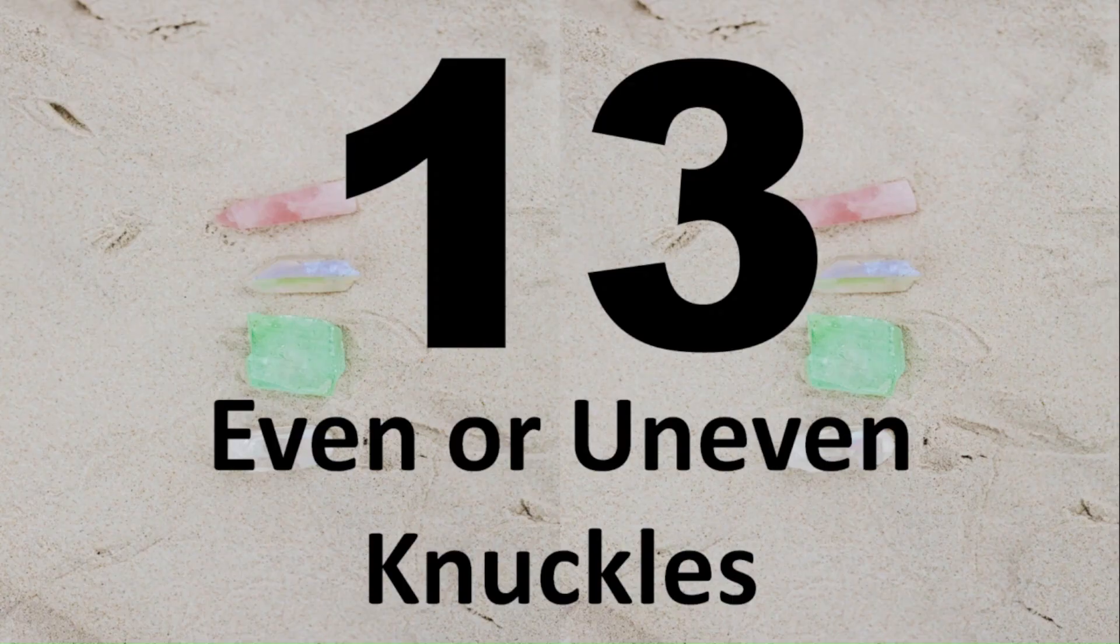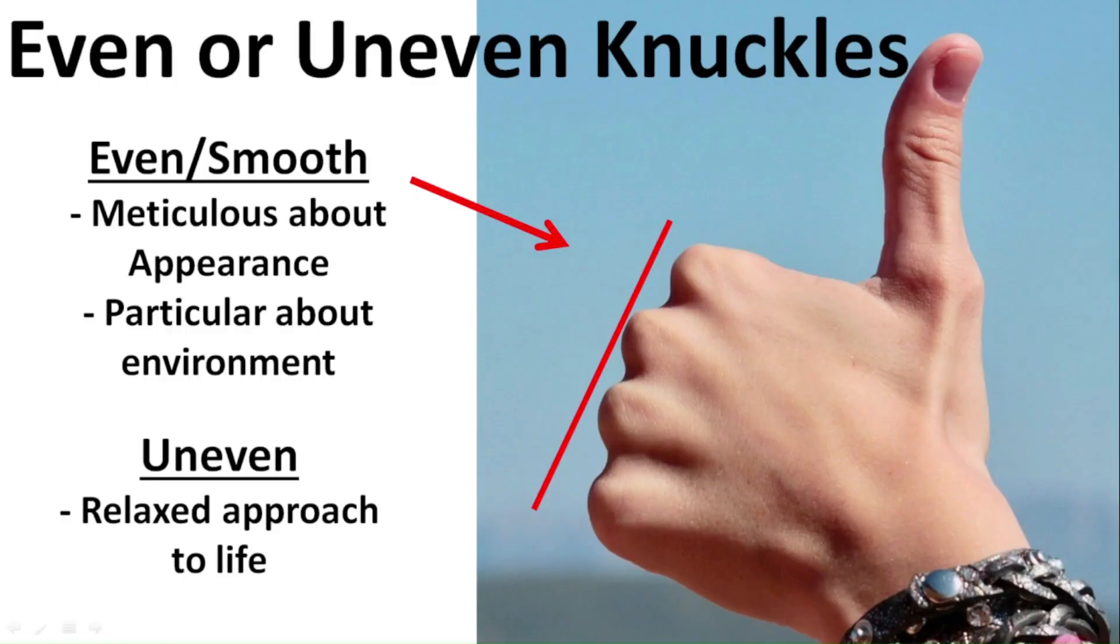Number 13, even or uneven knuckles. When your hand is clenched into a fist, look at how the knuckles on your hand lines up. If it's pretty even and smooth like this hand, then you'll be meticulous about your appearance and particular about your environment. If the knuckles are uneven, likely with the middle finger knuckles sticking out much more than the other knuckles, you'll have a more relaxed approach to life.